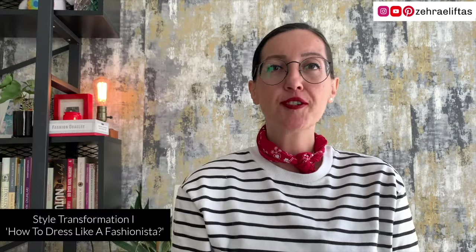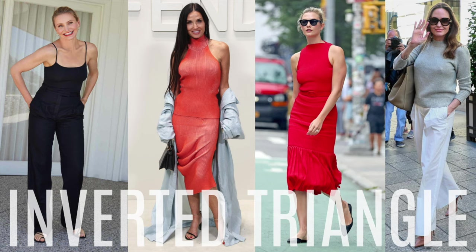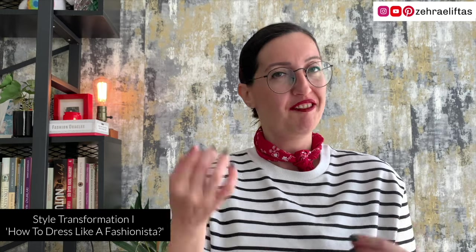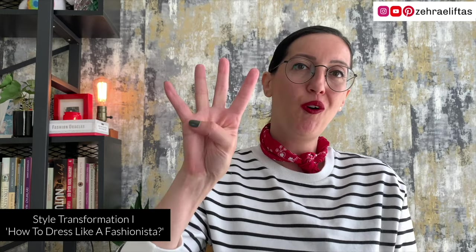Three: inverted triangle — like Cameron Diaz, Demi Moore, Angelina Jolie, and Karlie Kloss. The inverted triangle has an athletic silhouette where the shoulders are wide and broad, however with little or no definition of the waist, and straight to flat hips and rear. Usually, they have nice and slim legs.